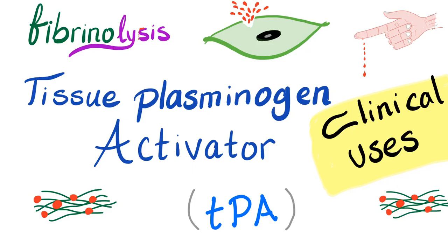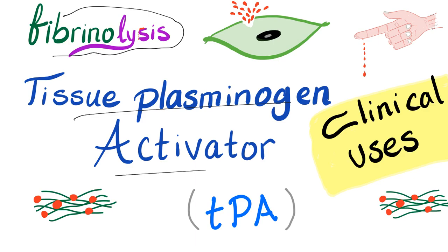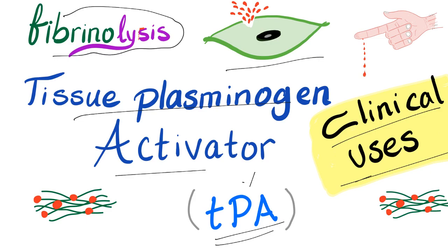It's Medicosis Perfectionalis, continuing our discussion on bleeding and coagulation disorders. In the previous video, we talked about tissue plasminogen activator. Today, we'll talk about the clinical uses of TPA. TPA, which comes from the injured endothelium — not the smooth endothelium — helps convert plasminogen into plasmin. Plasmin will then destroy the fibrin clot.